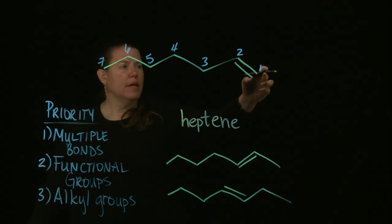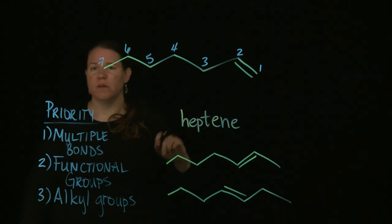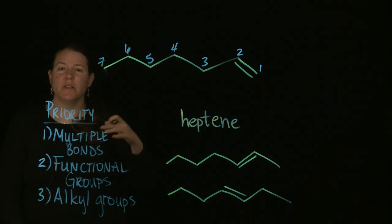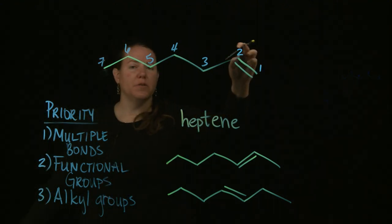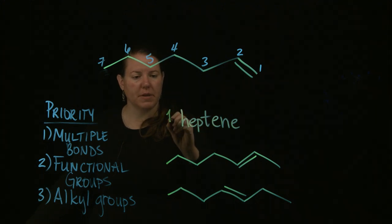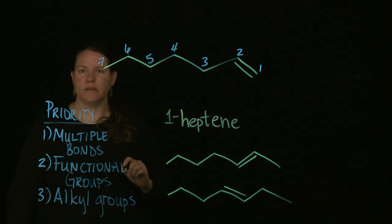Where is the double bond? Well, here, it's between positions one and two. Because it's between positions one and two, we just picked the lowest of those two numbers that are surrounding the double bond. So, between one and two, the lower number is one. So, this becomes one heptene.